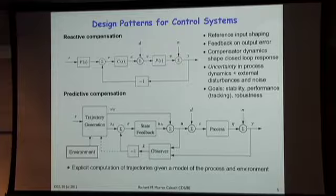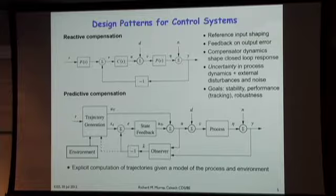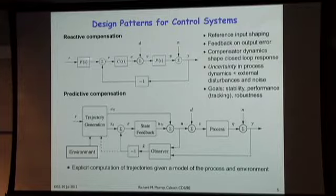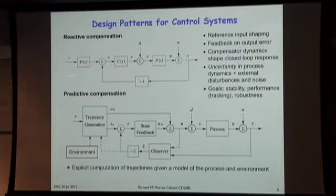A couple of extra things are important. We often shape the input—instead of suddenly asking the car to go from 55 to 65 and flooring it, you might ramp up over 10 seconds. That's a notion of feedforward compensation or reference shaping that generates the actual signal you try to track. We also care about disturbances—wind, hills—and measurement noise: my speedometer measurement may not be perfect. We also care about our model P(s) not being exactly known. I can get in and drive someone else's car and hold reference speed even without knowing the car's parameters, so we want to take that uncertainty into account.